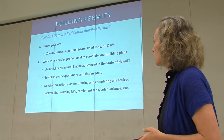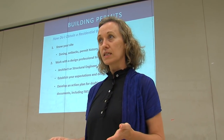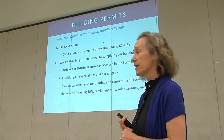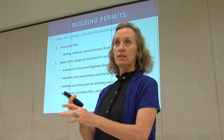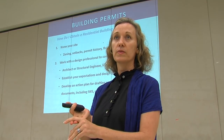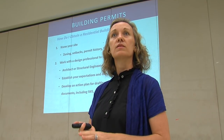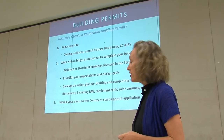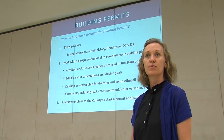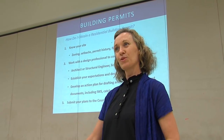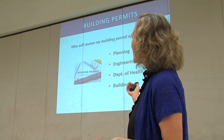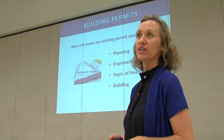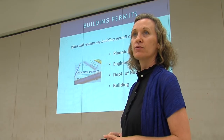You want to develop an action plan with your design team to draft and complete all required documents including your IWS, your catchment tank, and your solar variance. So even if you're doing a pre-approved package home, you still have to address site-specific issues such as IWS, catchment tank, and solar variance. Once you have your plans together, submit them to the county to start a permit application. Once you submit, the reviewing agencies will be Planning, Engineering, Department of Health, and Building Division — those four agencies review essentially every residential permit application.